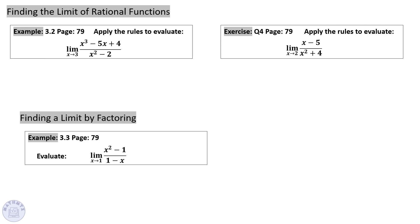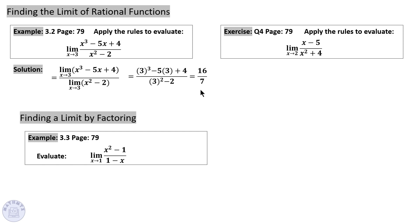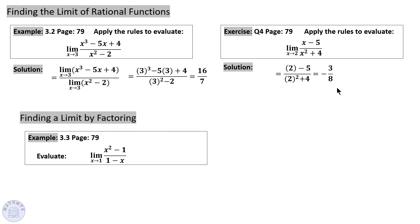In these examples, we will find the limit for rational functions. By default, your first method is substitution. If you substitute 3 in for x, this gives us 16 over 7. In the second question, substituting gives negative 3 over 8.